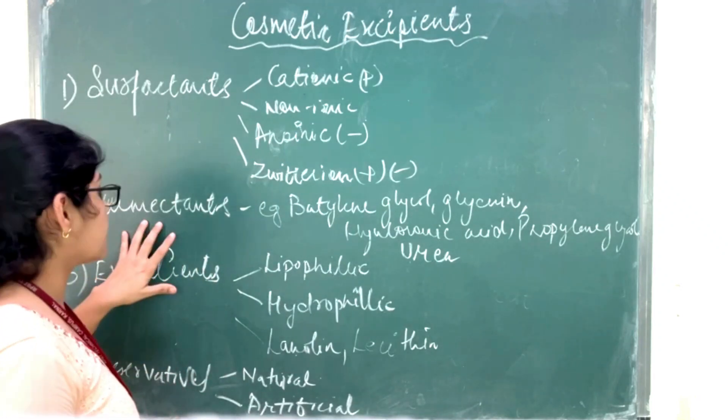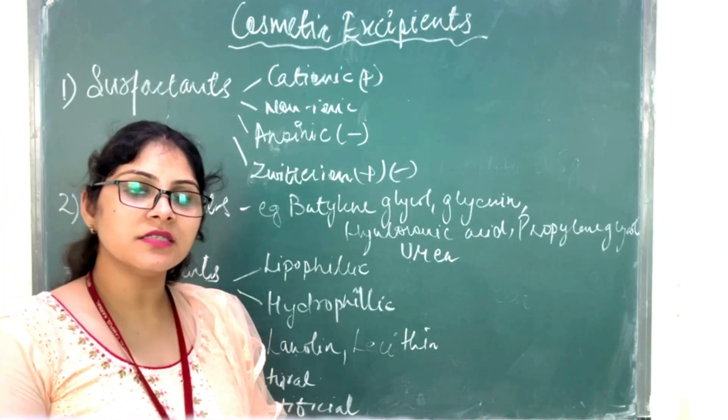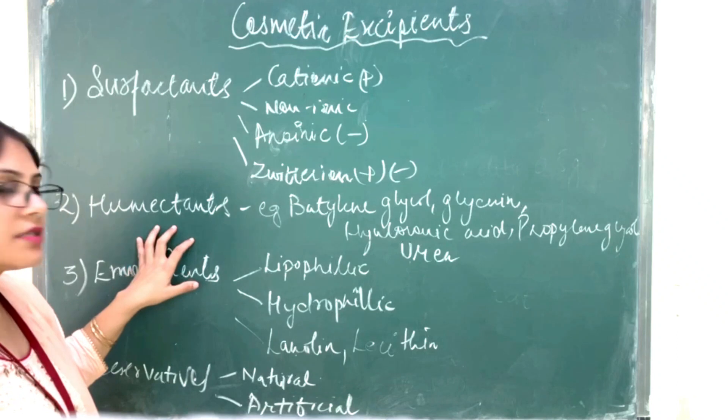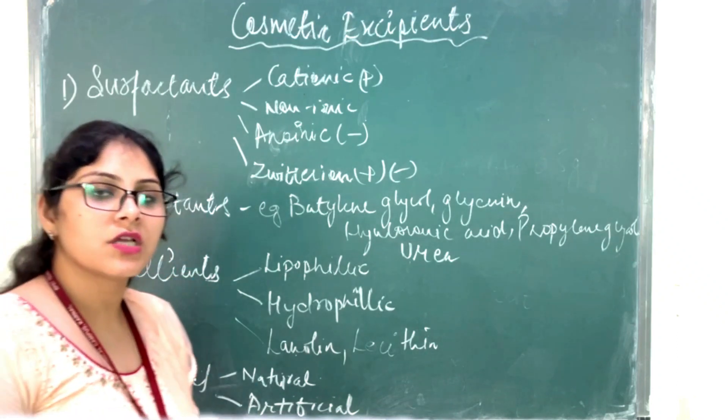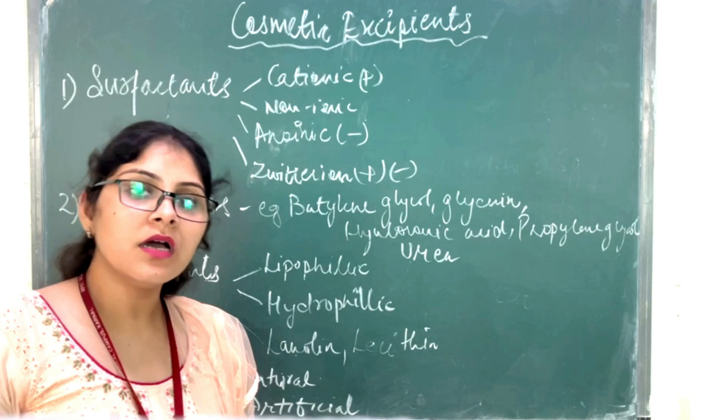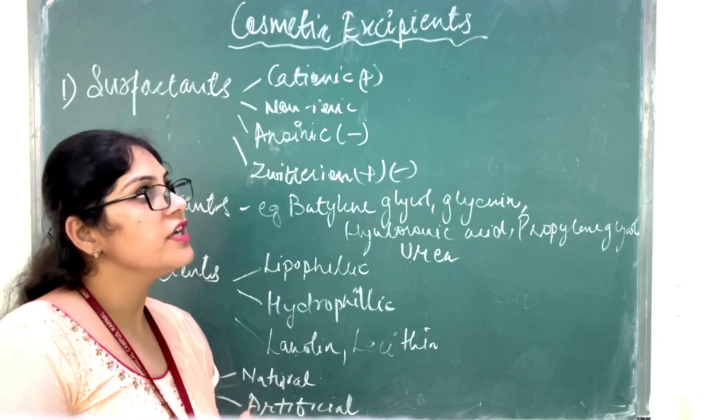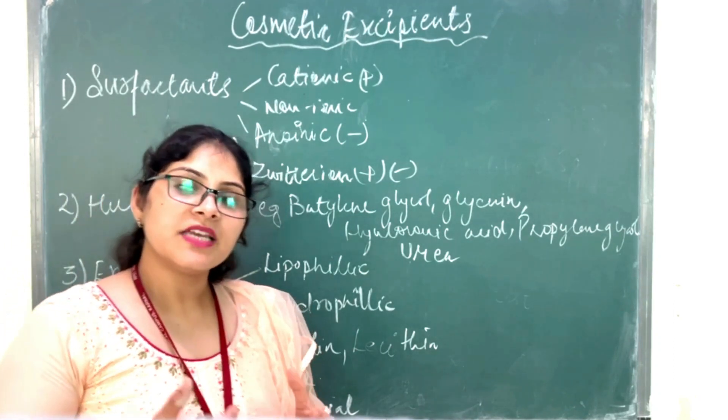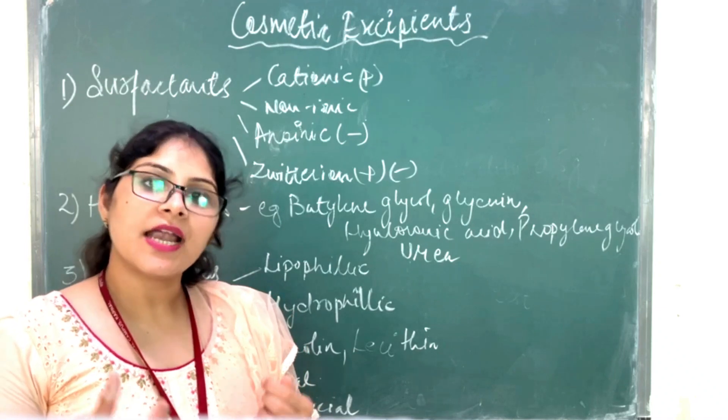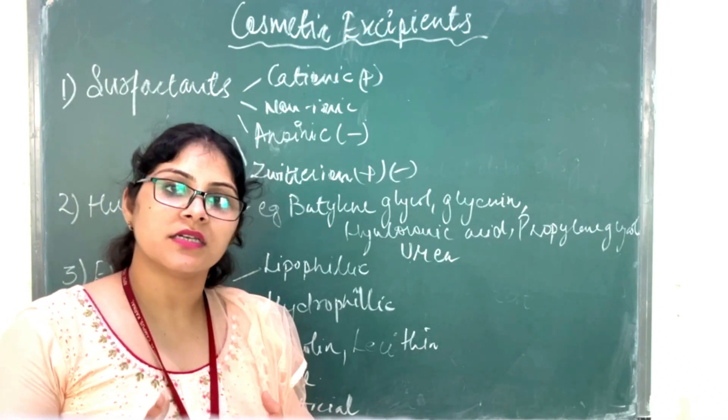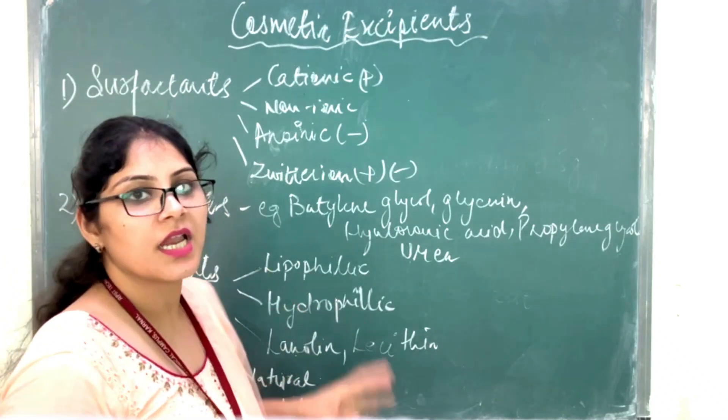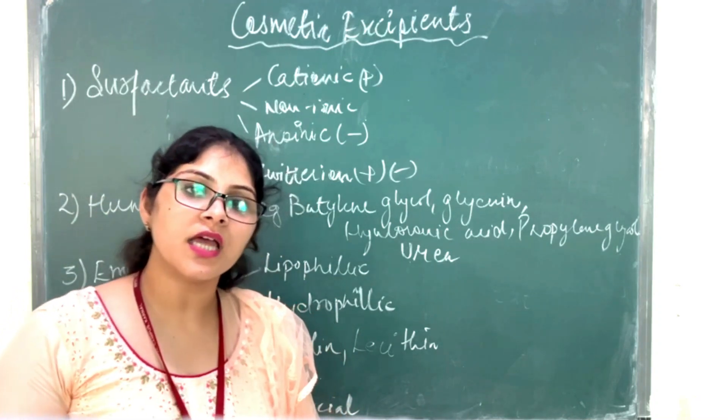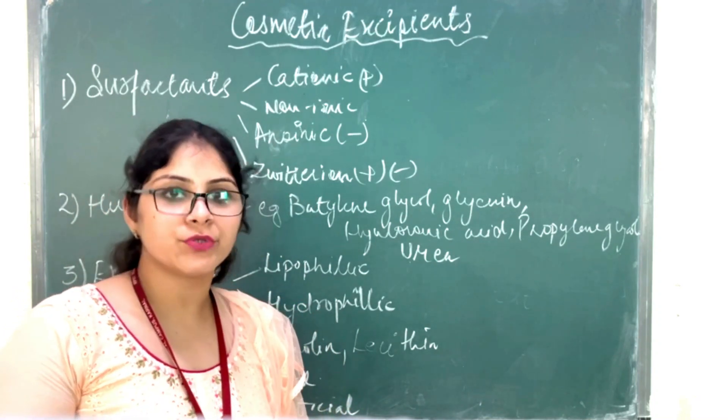Then comes the humectants. What are humectants? Humectants are the substances which retard the moisture loss from the formulations. For example, if we take the gel, it contains water. We add the gelling agent and the humectants. These are the hygroscopic materials, which absorb moisture and water.